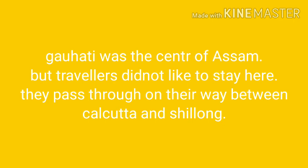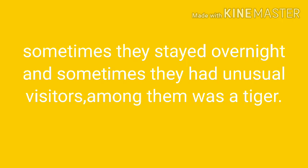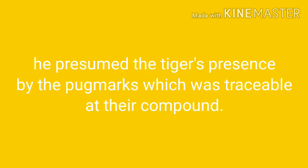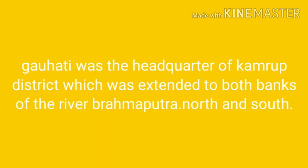Gohati was the center of Assam, but travelers did not like to stay there. They passed through on their way between Calcutta and Shillong, sometimes staying overnight. Sometimes they had unusual visitors — among them, there was a tiger. He only presumed the tiger's presence by the pug marks, which were clearly traceable in their compound. Pug marks means the footprints of an animal.